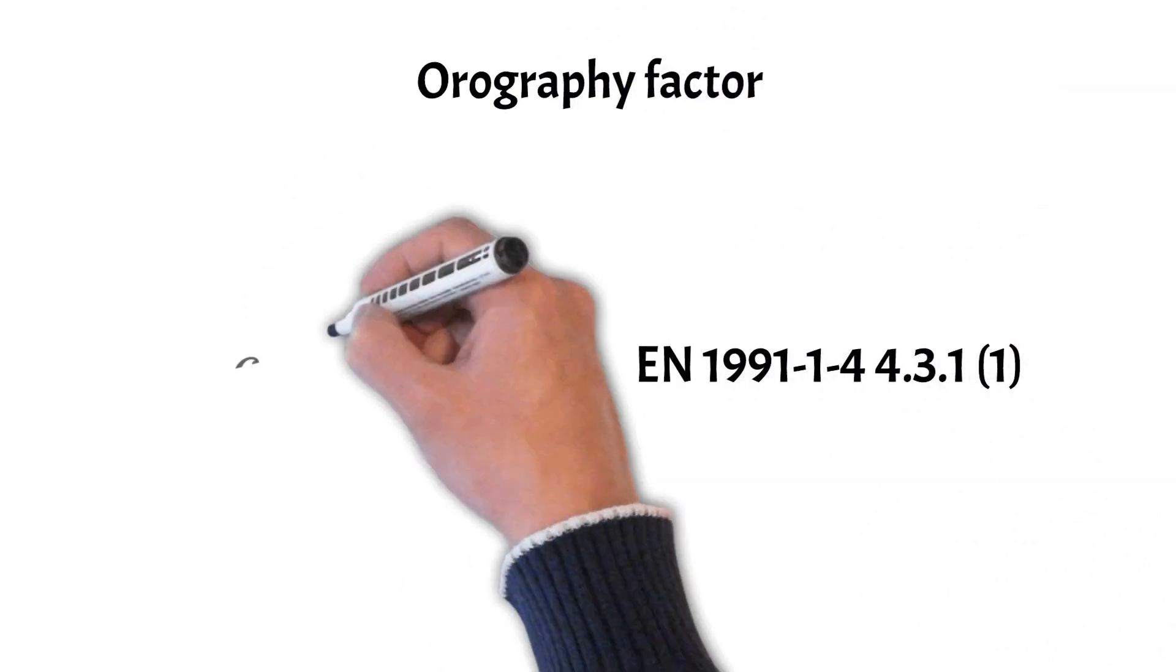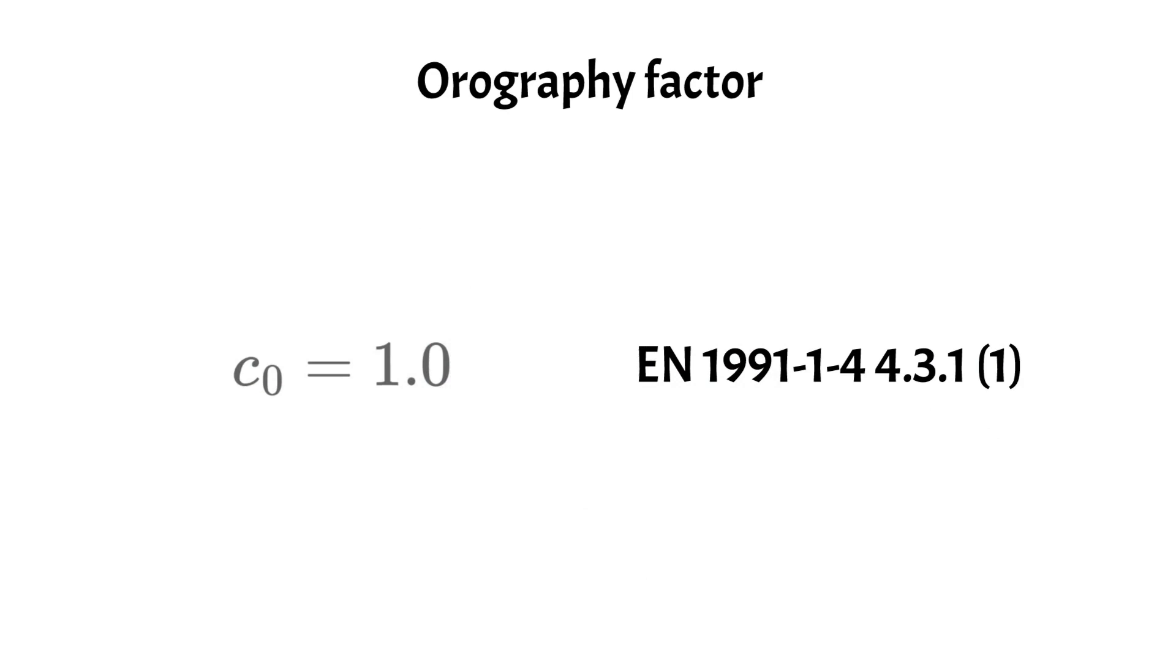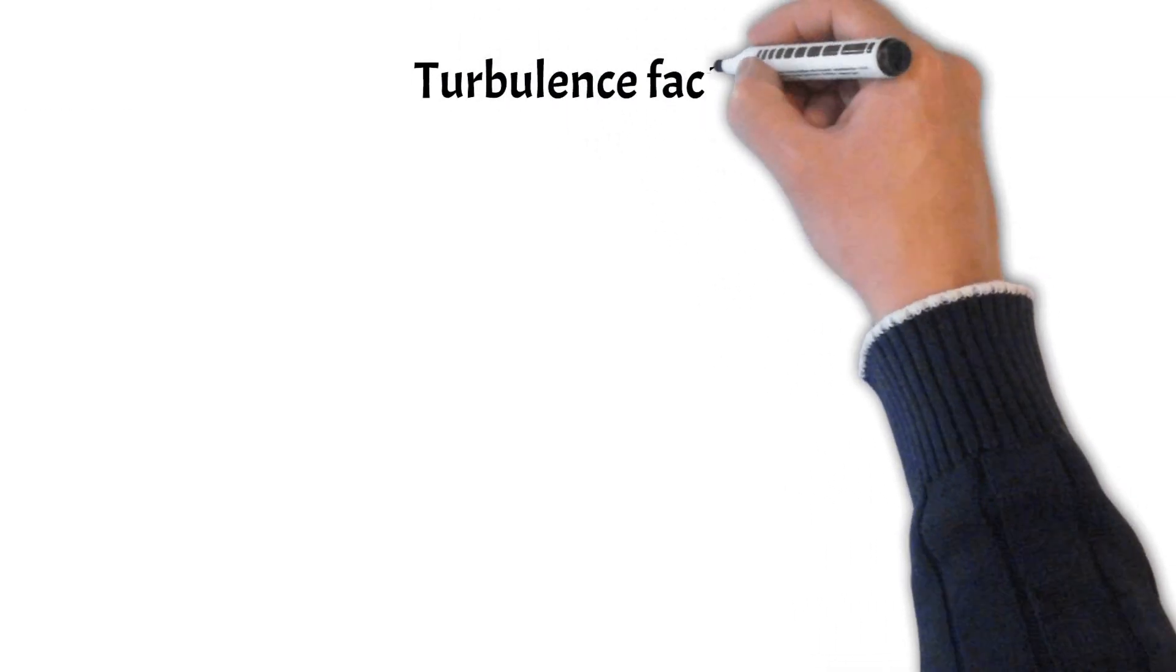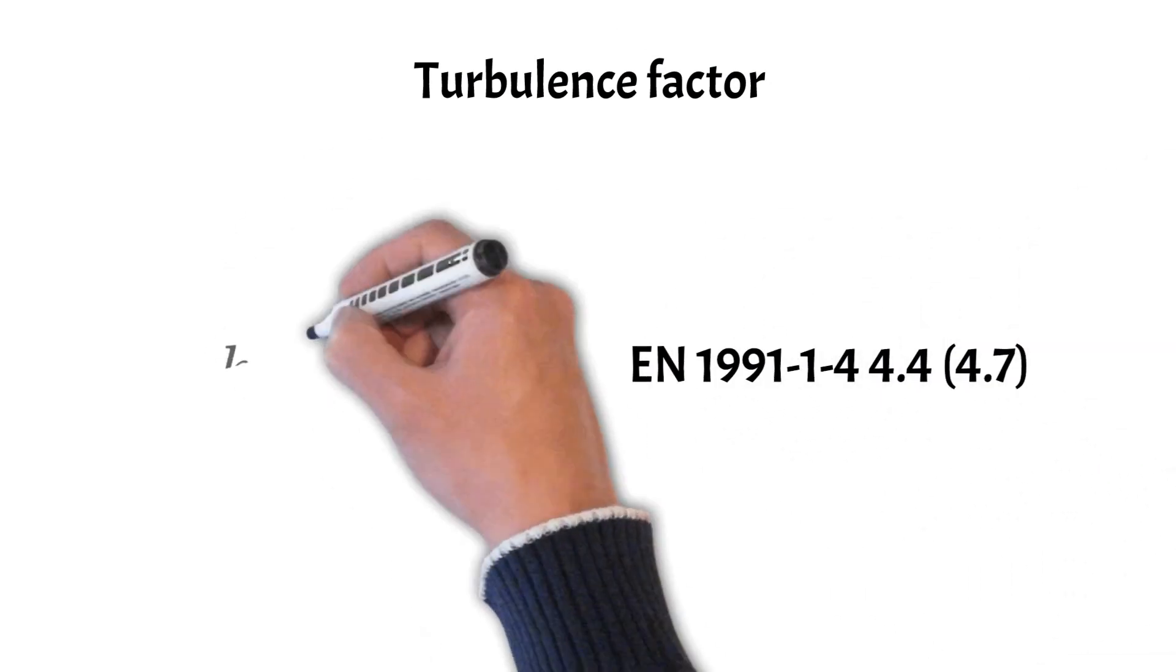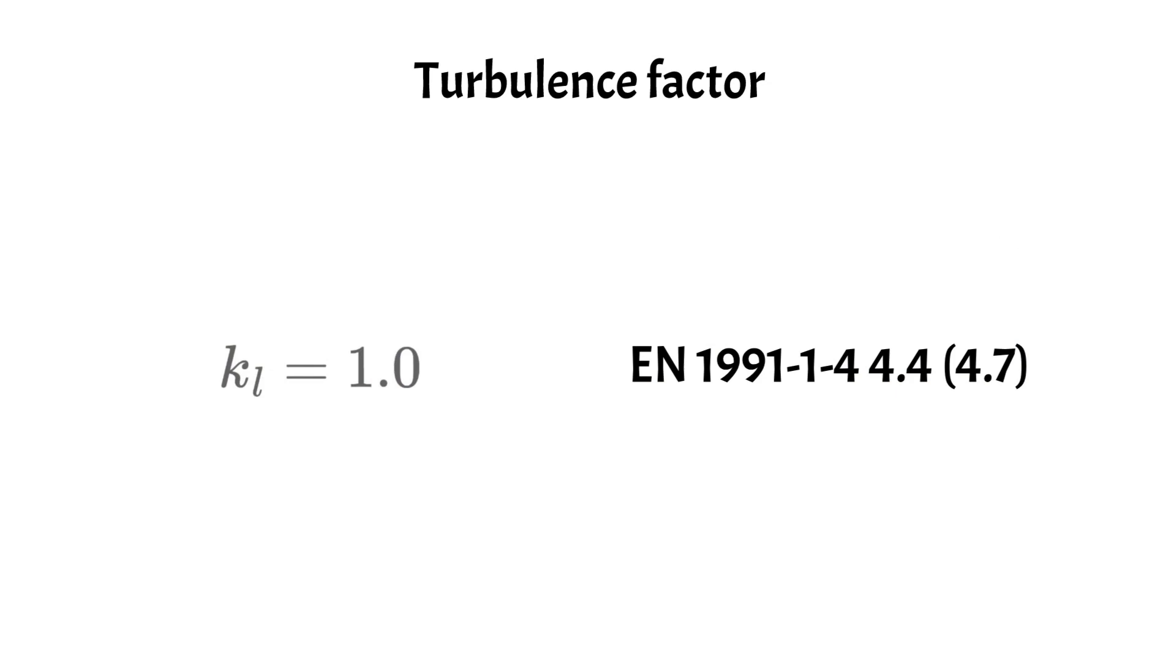Next up the orography factor C0. It is found in Eurocode S1, but you might also have to check the National Annex because the value might be defined differently there. We move on to the turbulence factor KL. Eurocode recommends the turbulence factor to be taken as 1, but as it is a recommendation, check again with your National Annex if the value is defined differently there.